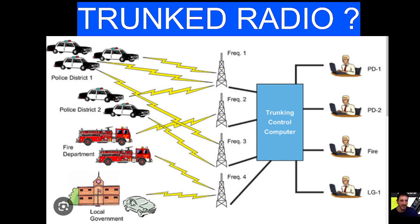The definition on Wikipedia is: 'A trunked radio system is a two-way radio system that uses a control channel to automatically assign frequency channels to groups of user radios.' I'll put a link to the wiki page in the description because I think it's interesting.